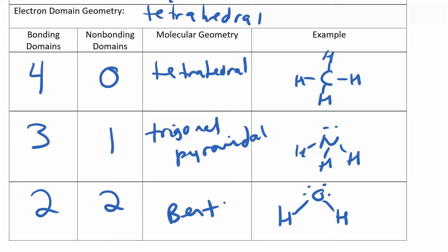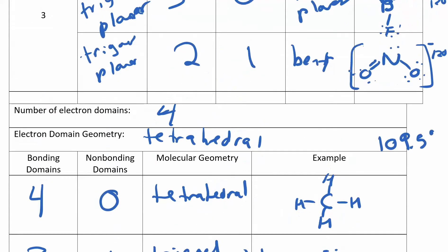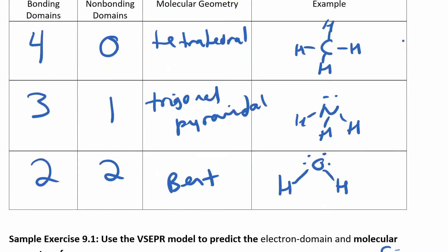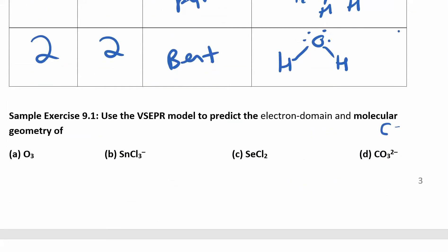The bond angles for tetrahedral are always 109.5°. This applies to tetrahedral, trigonal pyramidal, and bent when the electron domain geometry is tetrahedral — bond angles are always 109.5°. Going back to the earlier bent case, those bond angles were 120°. So you have two things that look very similar — both called bent — but the difference in bond angle tells them apart. Let's do a couple of examples.